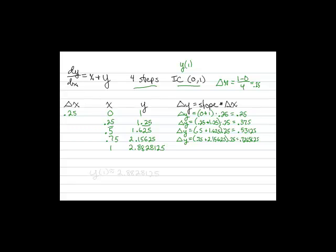So according to Euler's method with four steps and an initial condition of (0, 1), y of 1 is approximately 2.8828125.